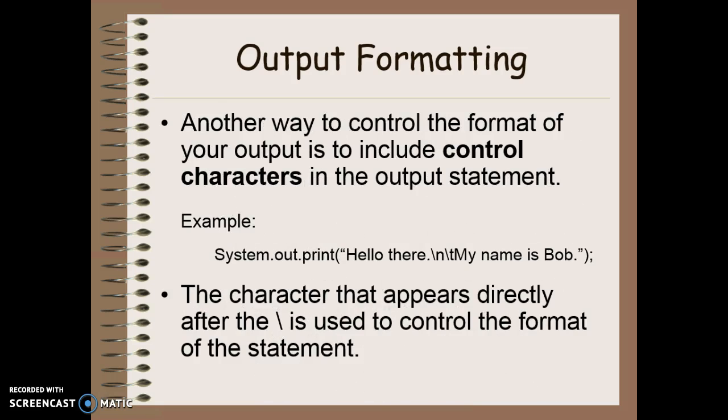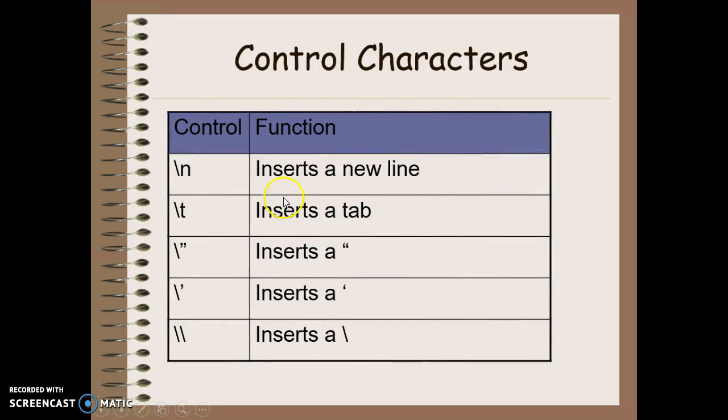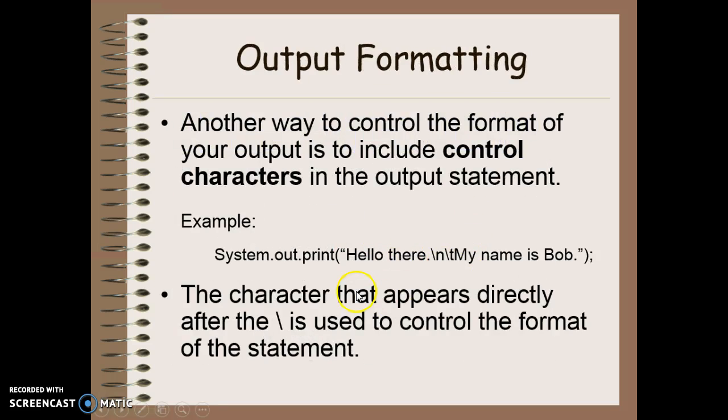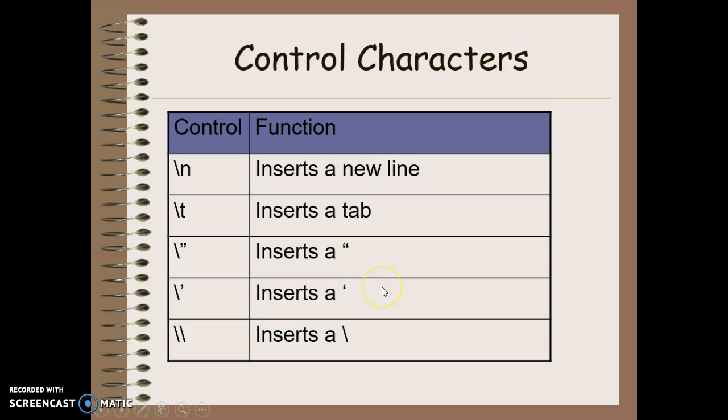Another way to control the format of your output is to use control characters in the output statement. So you can see here I say hello there backslash n backslash t my name is Bob. That backslash is an escape character that is used to control the format of the statement. There are a number of different escape characters we have. Backslash n will insert a new line character. Backslash t inserts a tab so here we have hello there the next line and then a tab my name is Bob. Backslash quote for inserting a double quotation, backslash single quote for inserting a single quotation, and if I want to actually insert a backslash I have to say backslash backslash.